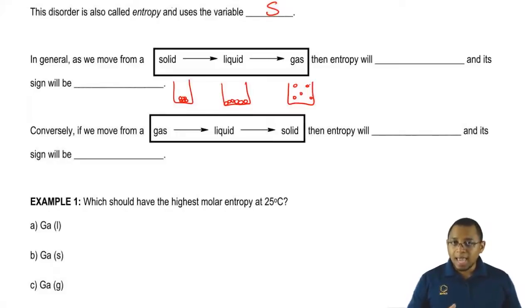we're going to say entropy or chaos will increase because the molecules get farther and farther apart. And if entropy is increasing, then the sign of entropy will be positive.